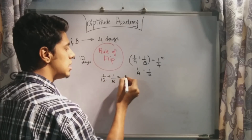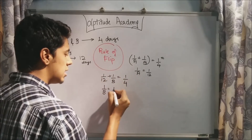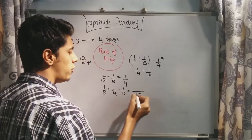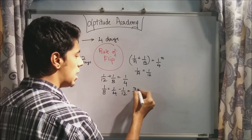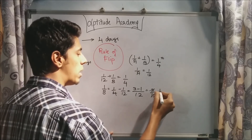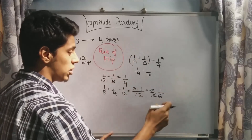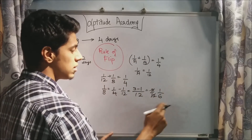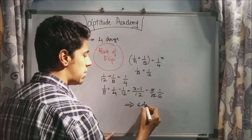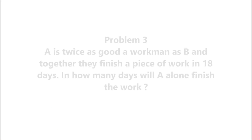Rearranging: one by b equals one by four minus one by twelve. The LCM is twelve, so this becomes three minus one over twelve, which is two by twelve, or one by six. So B does one by sixth of the work every day. By the rule of flip, the work is done by B in six days. That's the answer.